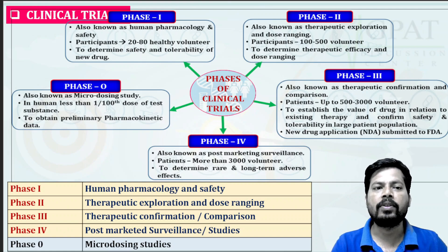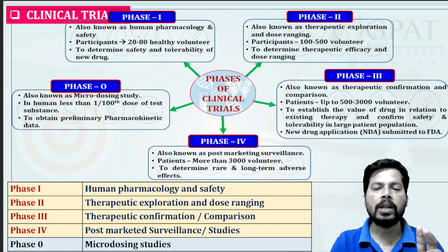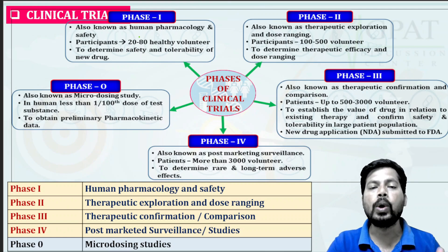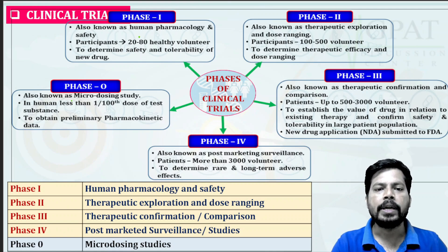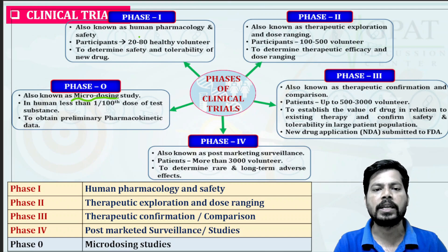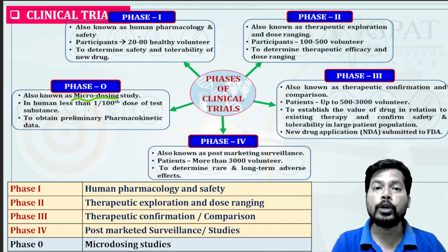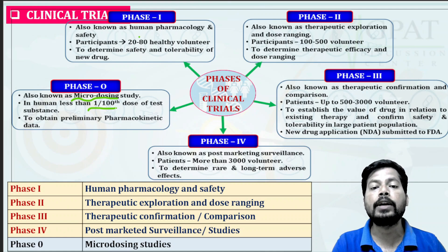There are totally five different phases of clinical trials. In old days only four phases existed, but recently Phase Zero was also introduced. Phase Zero is also known as the micro dosing study.